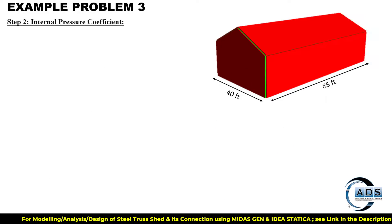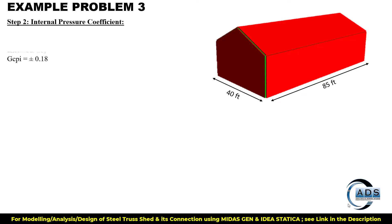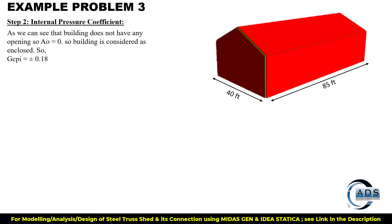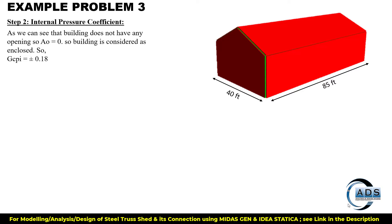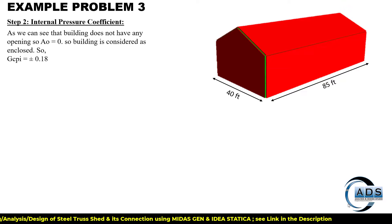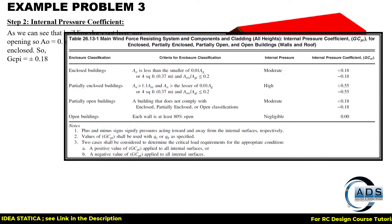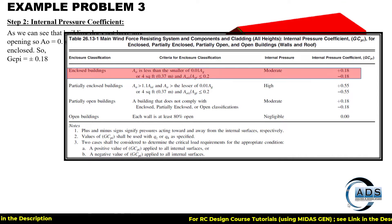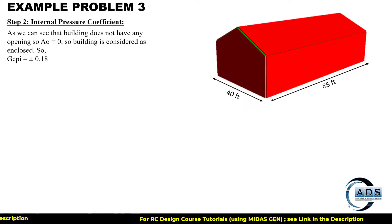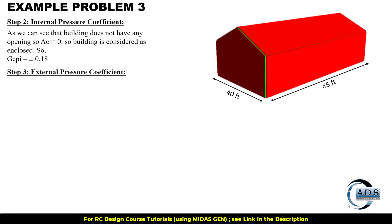Step 2 is to find out the internal pressure coefficient. Since we do not have any particular opening — as it is an ideal condition for now — using the relevant table we are getting GCpi value as plus or minus 0.18, considered as an enclosed building.